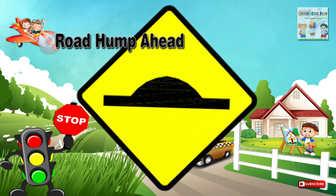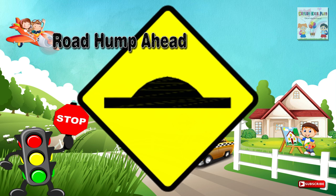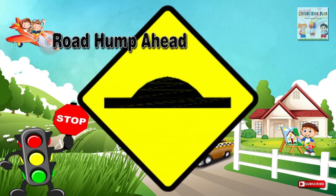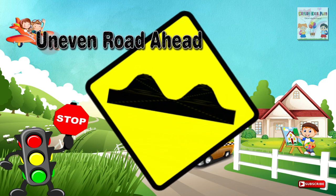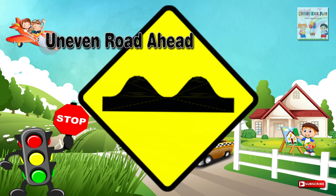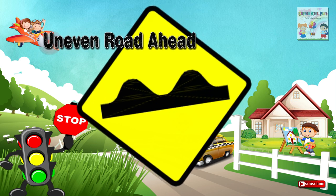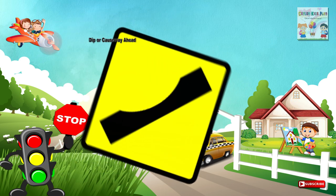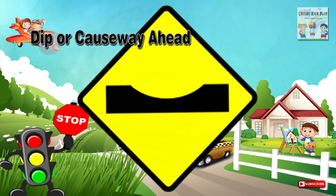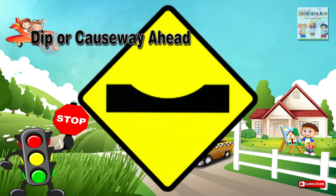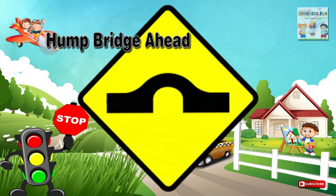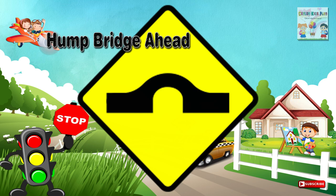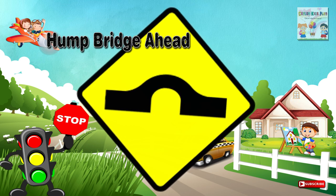Forty-four: Road hump ahead — a place on a road ahead where humps have been formed to reduce vehicle speed. Forty-five: Uneven road ahead — a place on a road ahead where the carriageway is dangerously uneven. Forty-six: Dip or causeway ahead — a dip ahead on the road or causeway. Forty-seven: Hump bridge ahead — a place on a road ahead where a hump bridge is located.